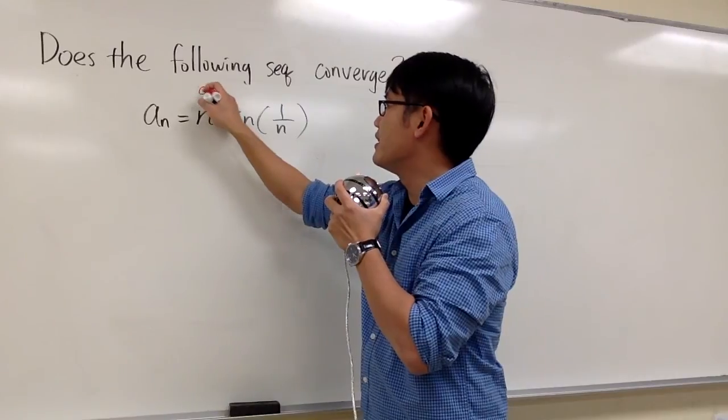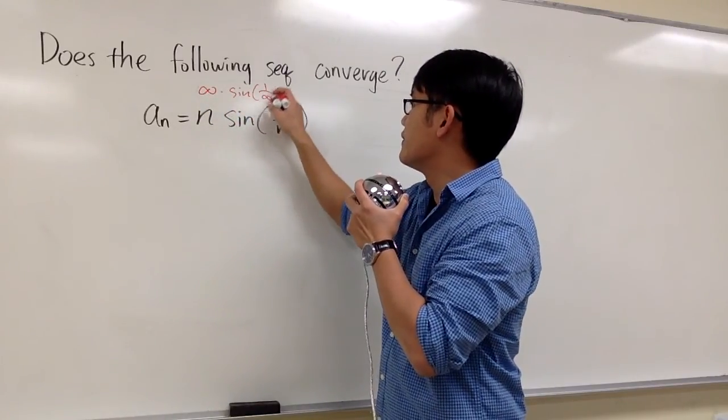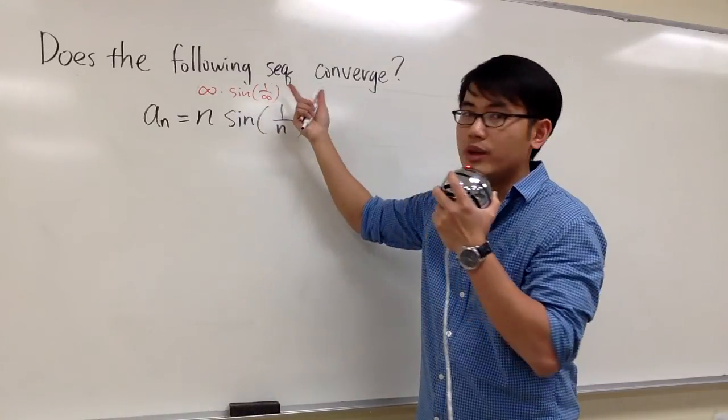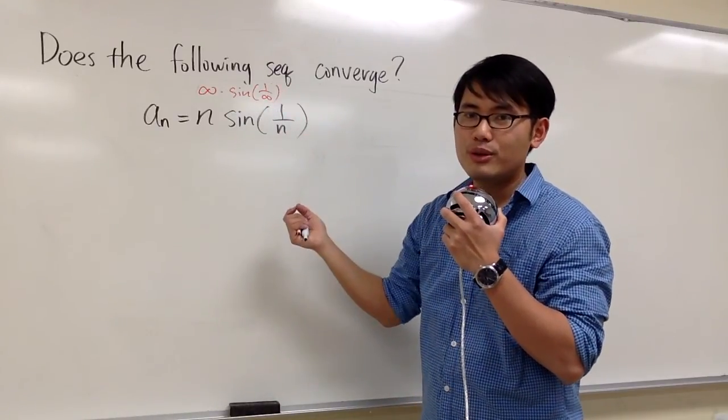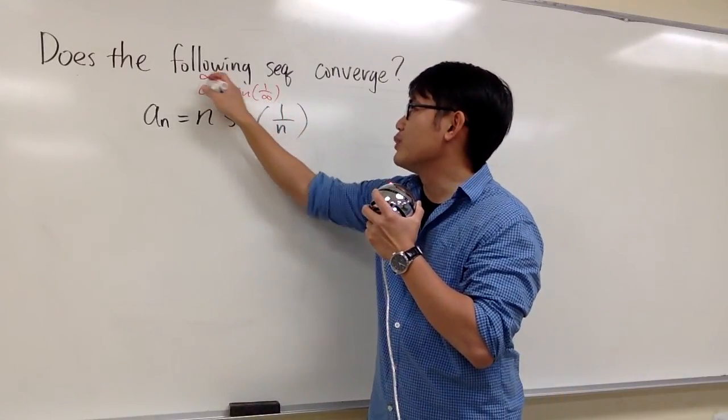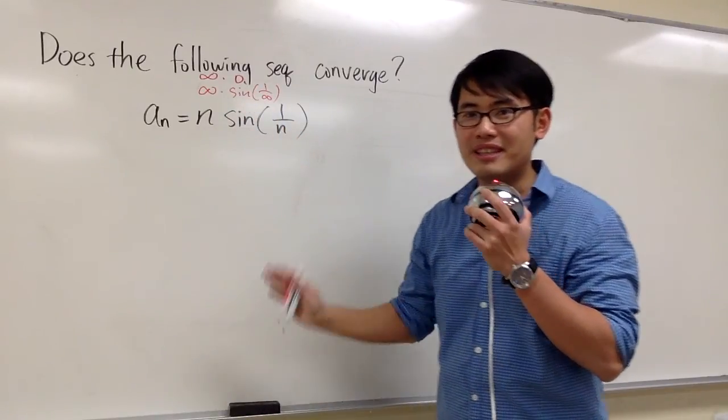We will have infinity times sine of 1 over infinity. We know that 1 over infinity, we can draw a conclusion which is 0, and then sine of 0 is 0. In this case, we'll have infinity times 0 though. That's bad because we don't know anything about it yet.